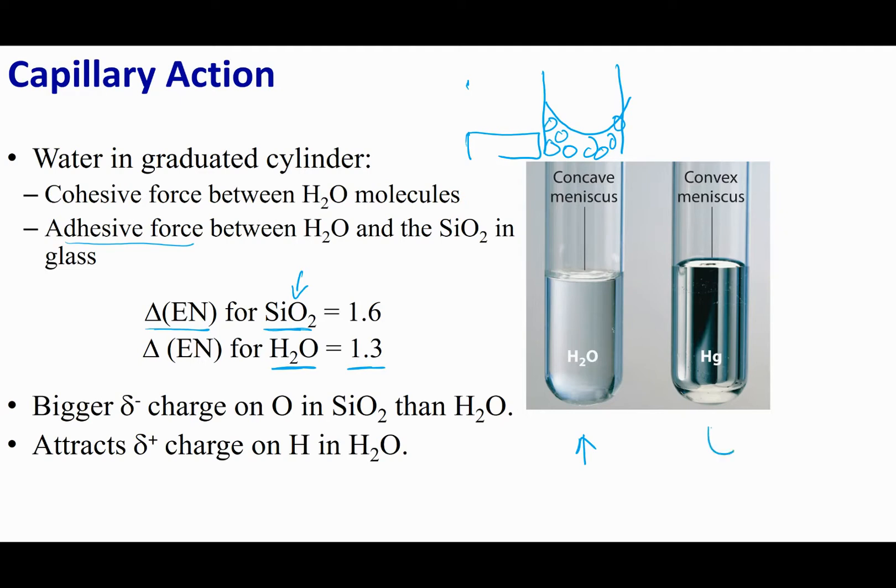If I have something that is non-polar like mercury, mercury isn't going to be attracted to the sides of the wall. Instead, mercury is going to be attracted to itself. In mercury, the cohesive forces are greater than the adhesive forces, so mercury likes to be with other mercury. They stay away from that wall, and you get a convex meniscus, or a piling away trying to stay away from those polar walls. More accurately, the mercury wants to stay with mercury rather than be next to those polar walls.